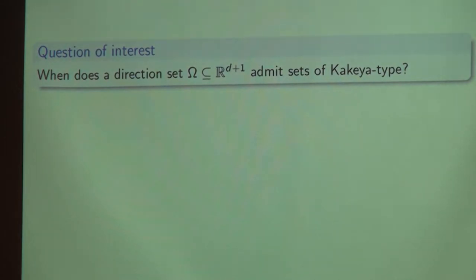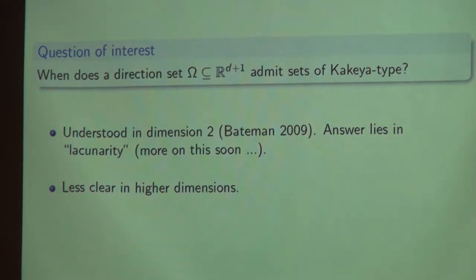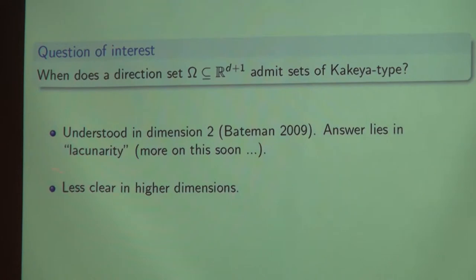So here's the question of interest: what are the direction sets omega that admit Kakeya-type sets? In dimension 2, this is well understood, largely due to the work of Bateman, building upon earlier work of Bateman and Katz, and also Alfonseca, Soria, and Vargas. The core concept turns out to be something called lacunarity. It's much less clear what lacunarity even means in higher dimensions, and what such a notion might have to do with the admittance of Kakeya-type sets.